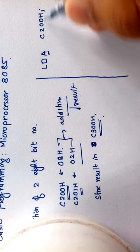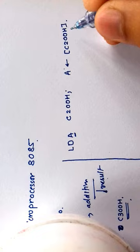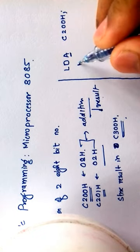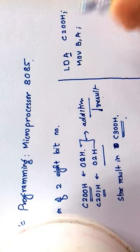Now we move the content of the accumulator to any other register. In my case, we have B register.